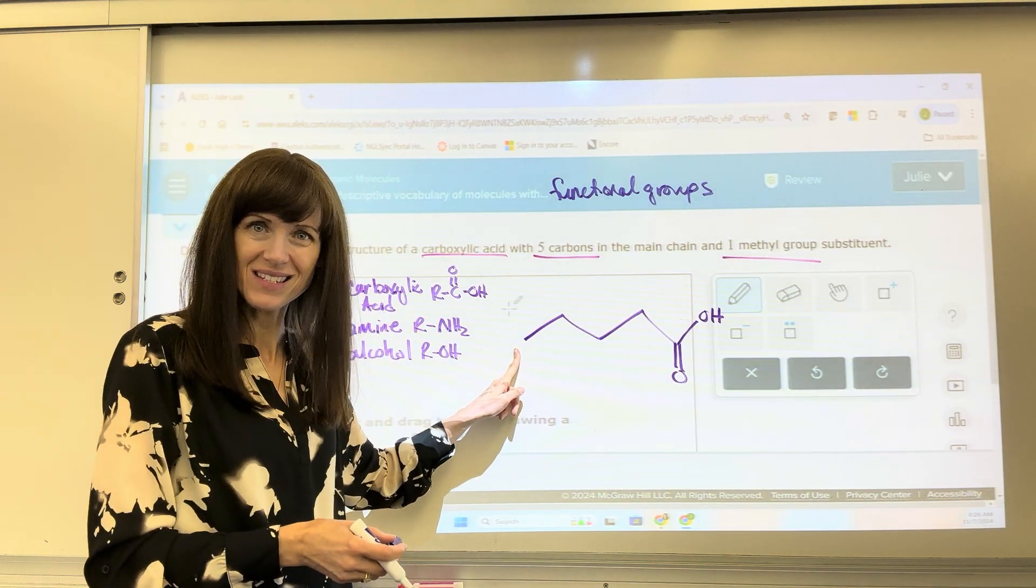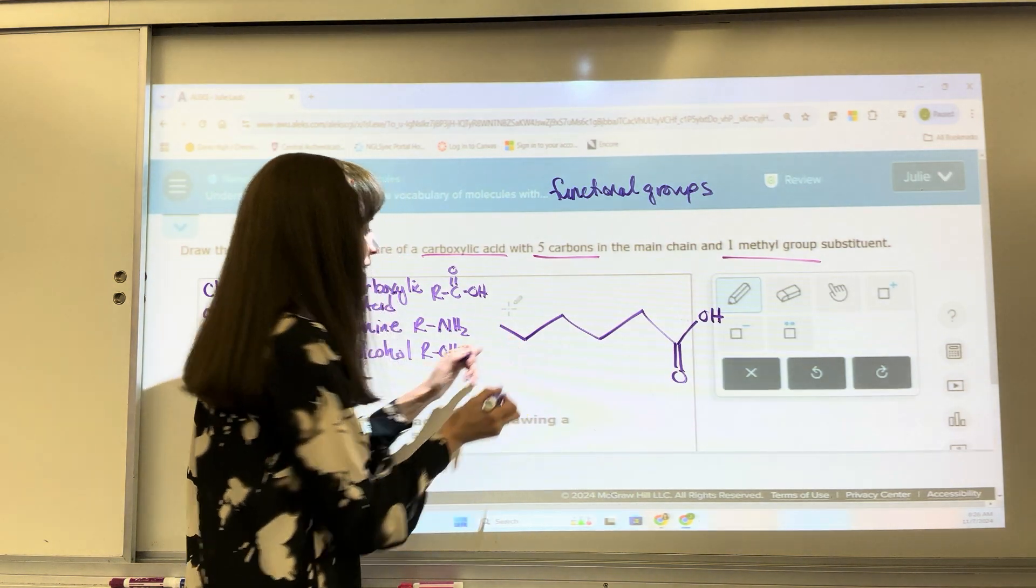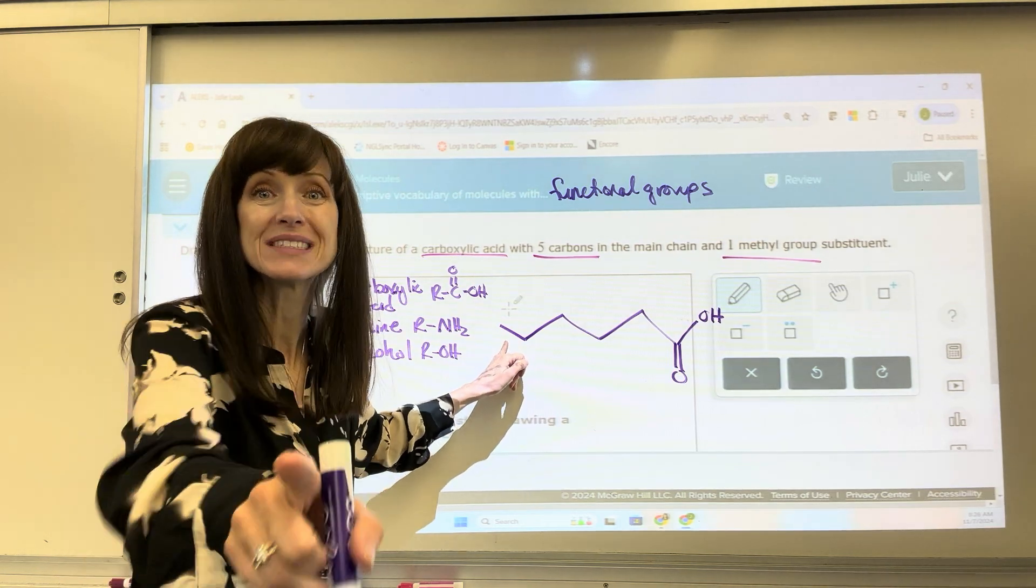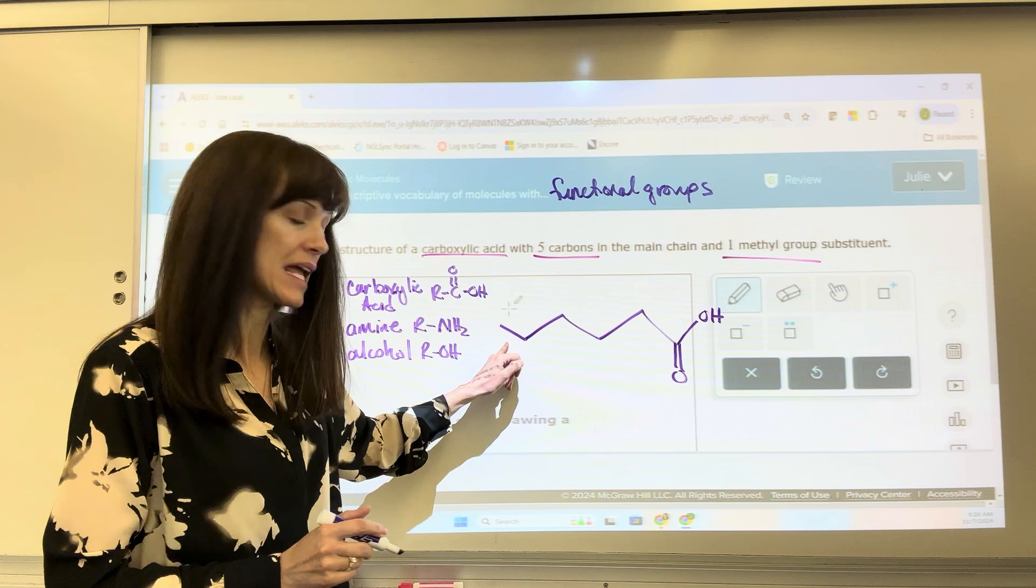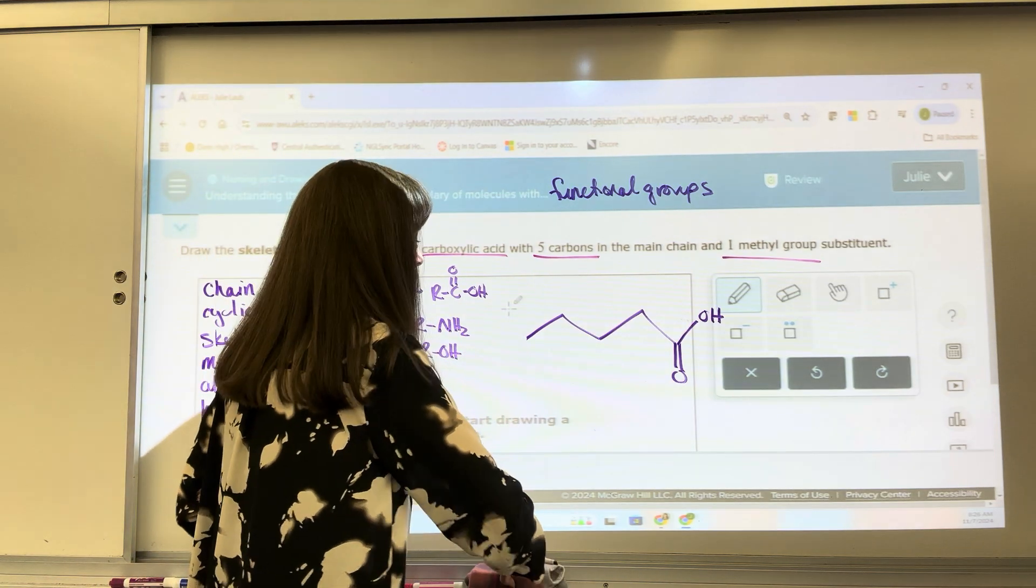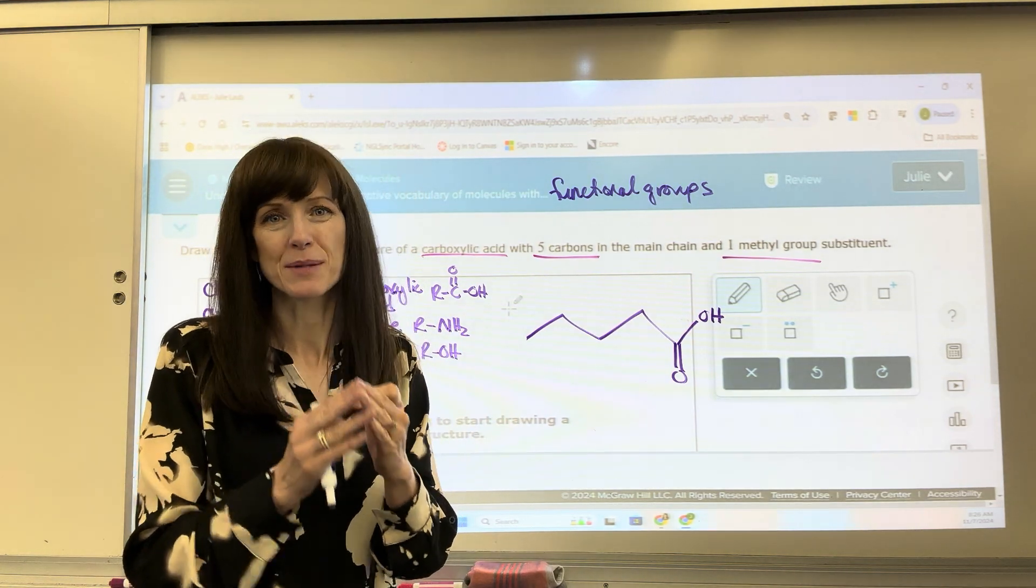If I put a methyl group there, it changes the chain to six. It changes this to a hexane rather than a pentane. I have to put the methyl group somewhere in the middle to make it a substituent.